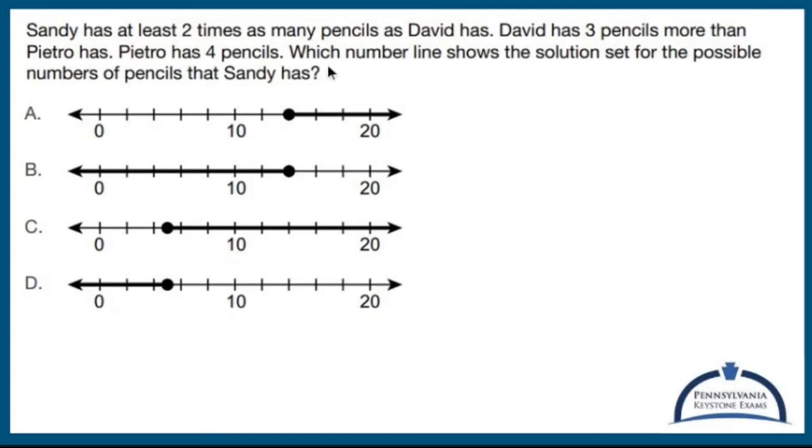So Sandy, Sandy, here's Sandy. I'm just going to write everything out. Sandy, and we'll use S I guess, has at least two times as many pencils as David. So Sandy is greater than or equal to two times David.